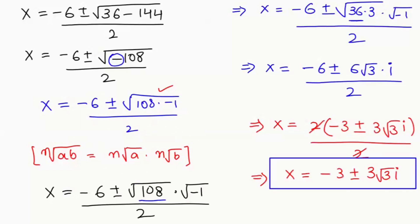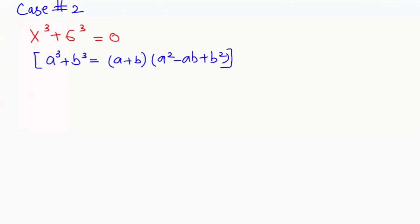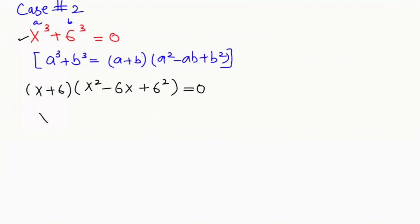Now solving Case 2: x³ plus 6³ equals 0. Applying the identity a³ plus b³ equals (a + b)(a² minus ab + b²), this gives (x + 6)(x² minus 6x + 6²) equals 0. From the first factor, x + 6 equals 0, so x equals negative 6.